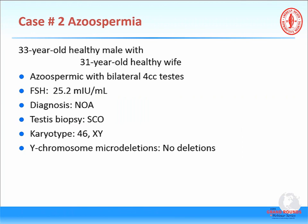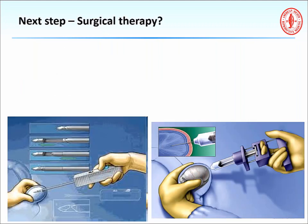Summarizing this patient: he has azoospermia, small testes, and high FSH. His biopsy done externally showed Sertoli cell-only syndrome. His karyotype came back totally normal, and his Y chromosome microdeletion testing came back without any deletions. Now we have to pursue surgical therapy to achieve sperm for use with assisted reproduction.